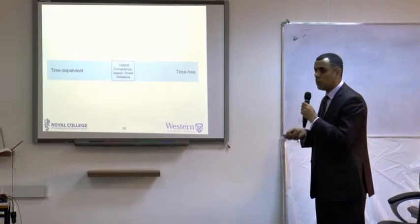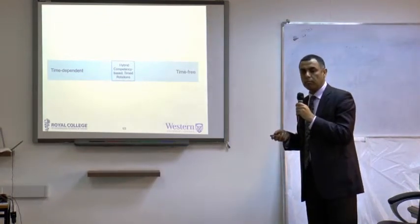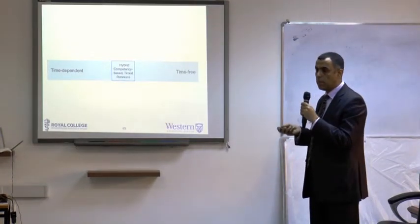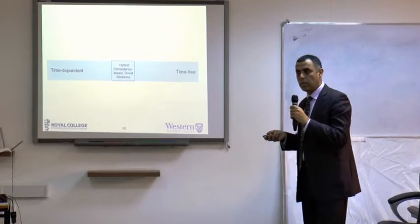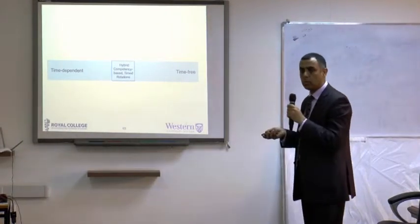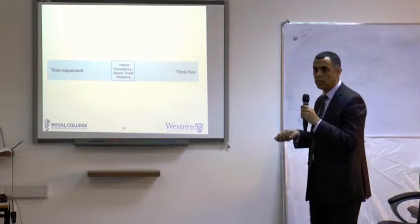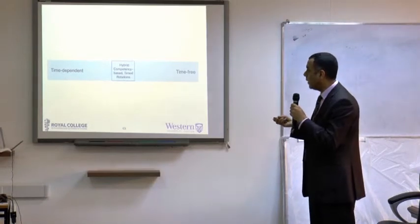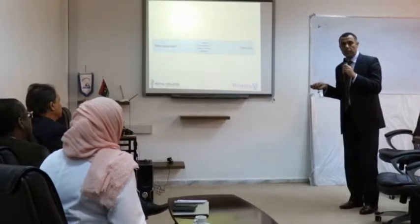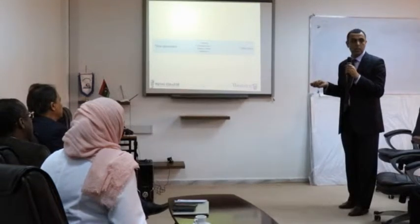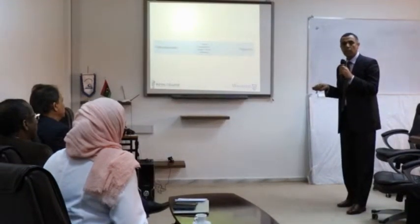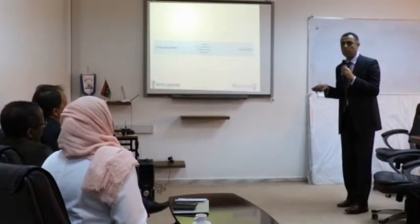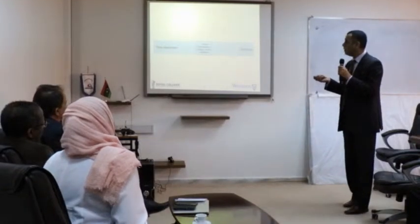They mainly use months or blocks. A calendar month is a month; a block is 28 days, or four weeks. So the year has 13 blocks and 12 months — different systems. Now we are more flexible, because we're not sure where the block or month came from to say you need one month for each specialty. Maybe we need two weeks, maybe six weeks, and so on. Now there is flexibility within the timeframe.